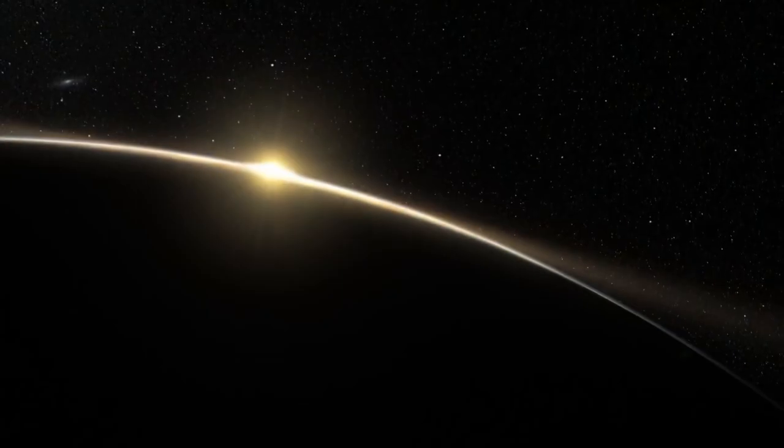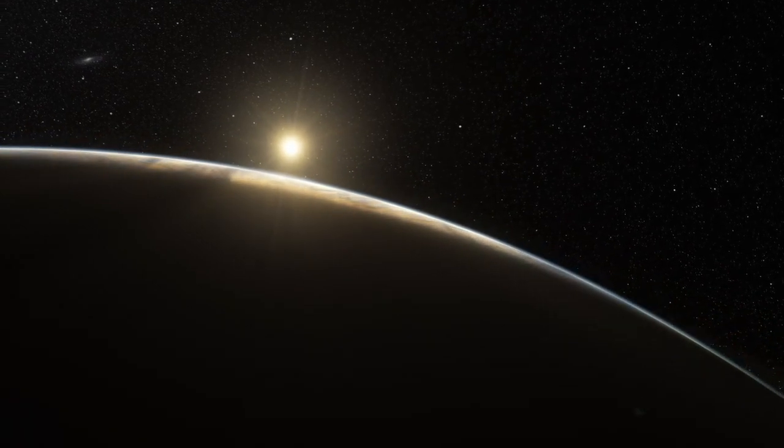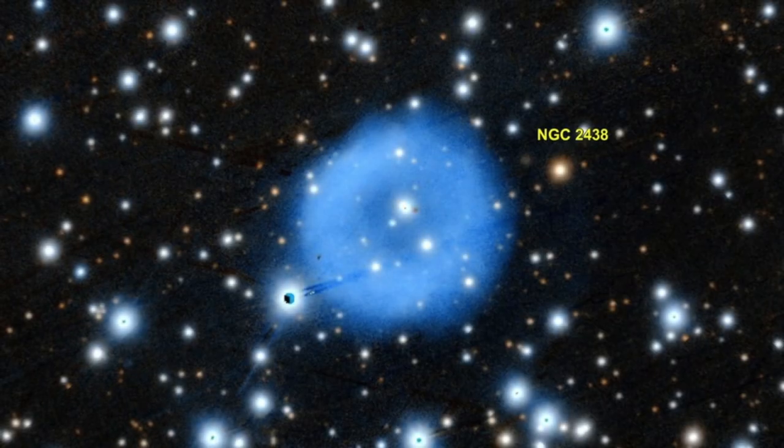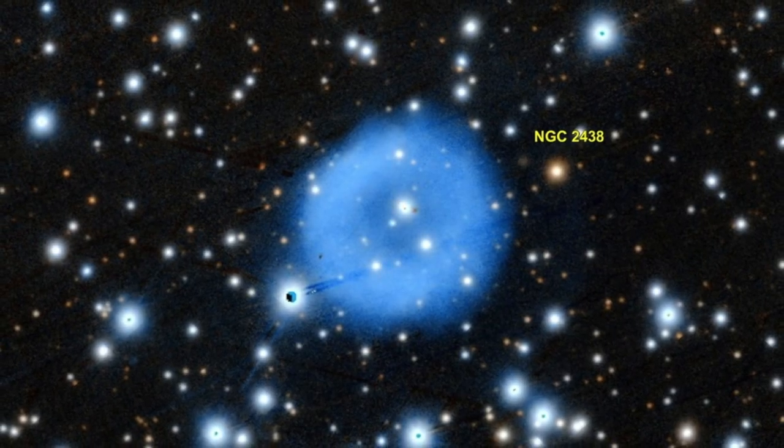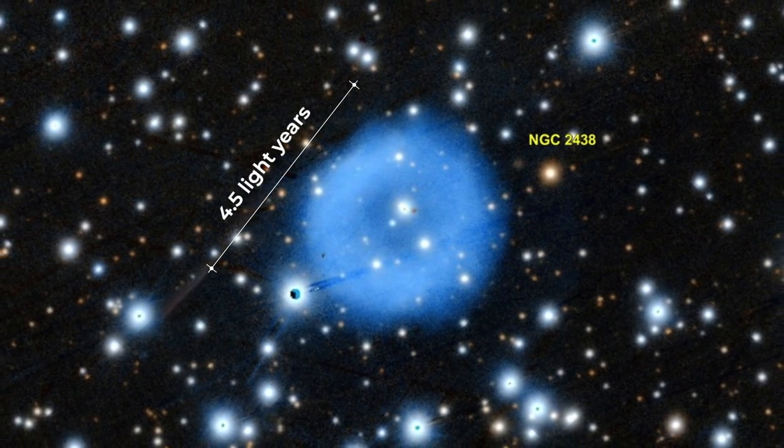The star that produced this nebula was very similar to our Sun, and towards the end of its life, it ballooned into a red giant and eventually shed its outer layers of gas, creating this massive glowing cloud. NGC 2438 spreads out over a distance of four and a half light years in diameter.